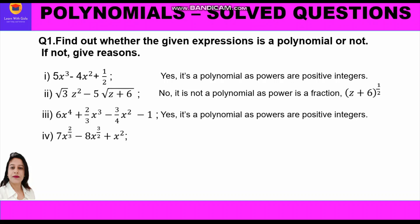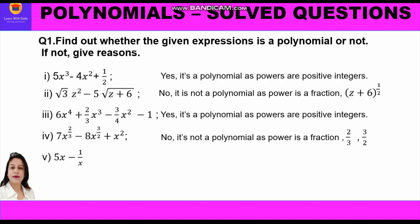Part 4: 7x^(2/3) − 8x^(3/2) + x². No, it is not a polynomial, as the powers are fractions. x is raised to power 2/3 and x is raised to power 3/2 — these are all fractional exponents, so it is not a polynomial.